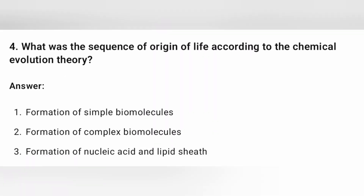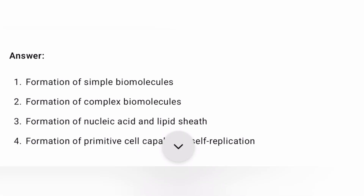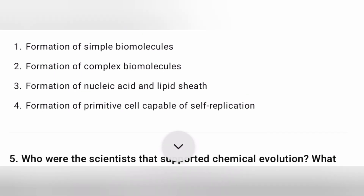According to the Urey-Miller experiment and chemical evolution theory, the sequence was: formation of simple biomolecules, then formation of complex biomolecules, then formation of nucleic acids and a lipid sheath, and finally formation of a primitive cell capable of self-replication — meaning the primitive cell multiplied.